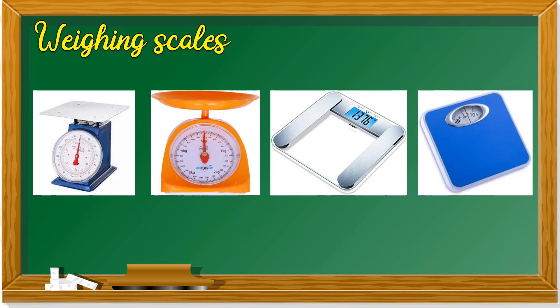Next one. This is the same as the third one — to measure your weight. Do you remember when we learned about time? There's manual and digital clock. For weighing scales, there are manual and digital as well. The first one, is it manual or digital? It's manual. Second one — manual. Third — digital. Fourth — manual.